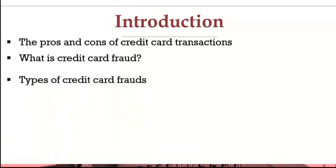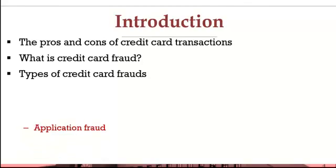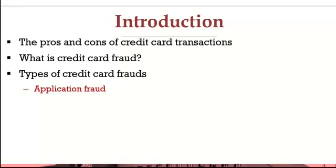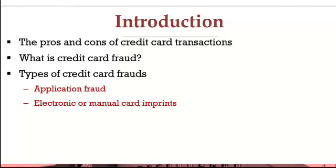There are different types of credit card frauds. Number one, application fraud — this occurs when a fraudster gains control of an application, obtains the customer's information, creates a phony account, and then conducts transactions with the retrieved information. Another type is electronic or manual card imprints, where the fraudster retrieves the needed information from the card's magnetic strip and utilizes it to carry out fraudulent activities.